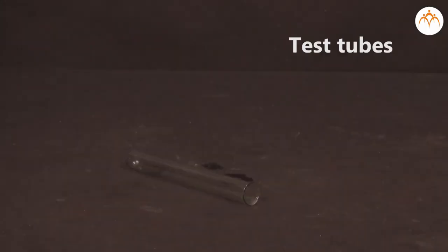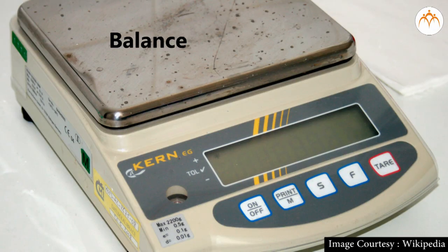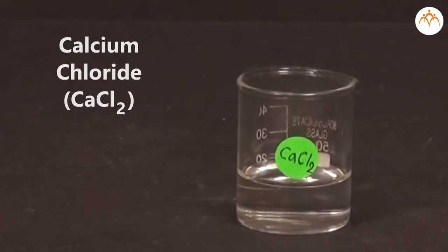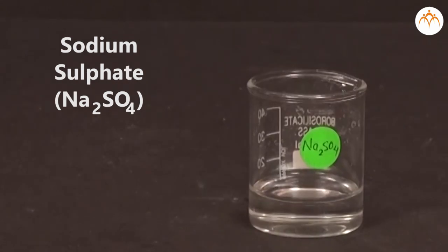We will use a conical flask, test tube, rubber cork, and balance for this experiment. We also need solutions of calcium chloride and sodium sulphate.